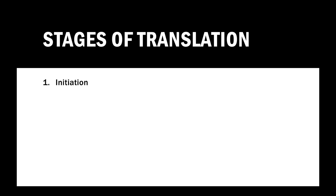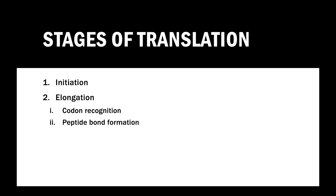Now let's take a look at what specifically happens during translation. There are three stages of translation: initiation, elongation — which consists of a three-step cycle of codon recognition, peptide bond formation, and translocation — and it ends with termination.